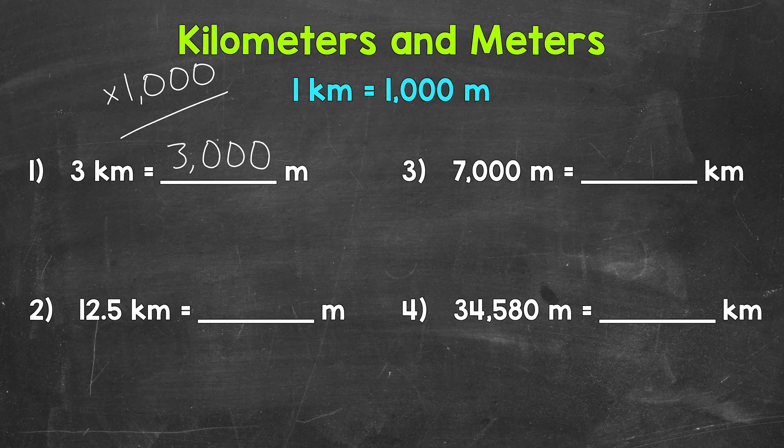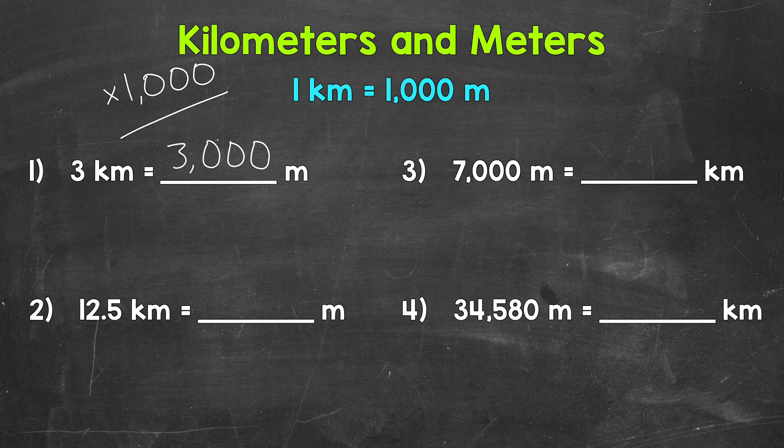What we can do here, we can move the decimal 3 times to the right in order to multiply that number by 1,000. When we multiply by 1,000, we push each digit to the left 3 places. This will increase the value of that number by 1,000 — in other words, we are multiplying it by 1,000. So we move the decimal 3 times to the right in order to shift all of our digits 3 places to the left and give us the correct answer.